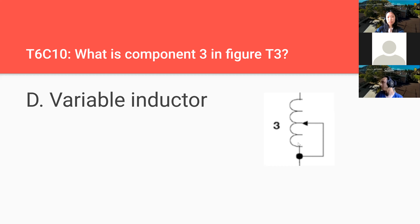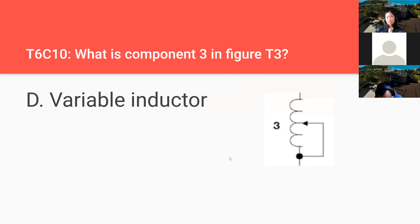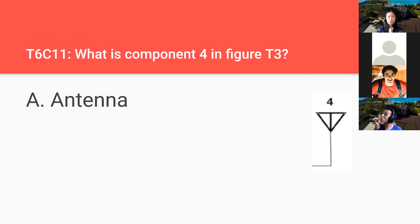Resistors are spiky and inductors are round in schematic symbols. What is component four in figure T3? That is an antenna — it's sticking up in the air just like an antenna.